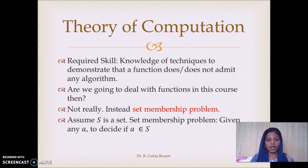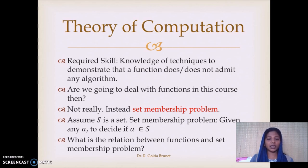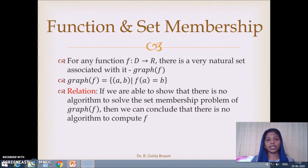So, what is the set membership problem? Assume S is a set and the set membership problem is defined like this: given any a, to decide if a belongs to S. What is the relation between functions and the set membership problem? Let us see. For any function f from domain to range, there is a very natural set associated with it called the graph of f. The graph of f is defined as the set of all tuples (a, b) such that f of a is equal to b. The relation between the function and the set membership is like this: If we are able to show that there is no algorithm to solve the set membership problem of the graph of f, then we can conclude that there is no algorithm to compute f.